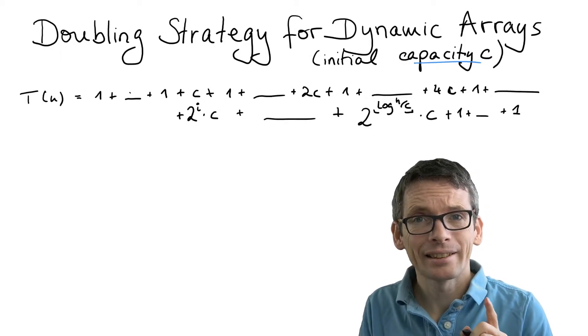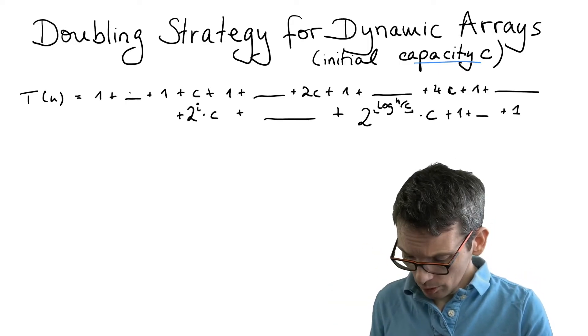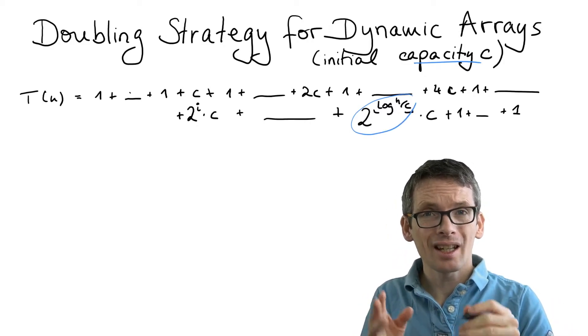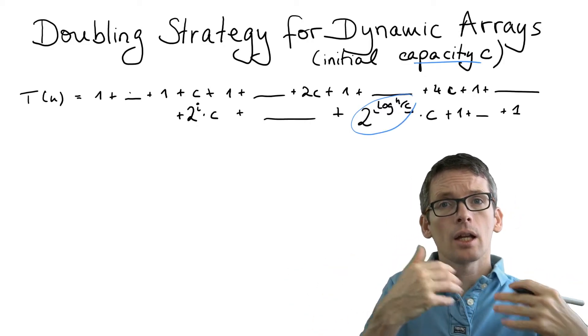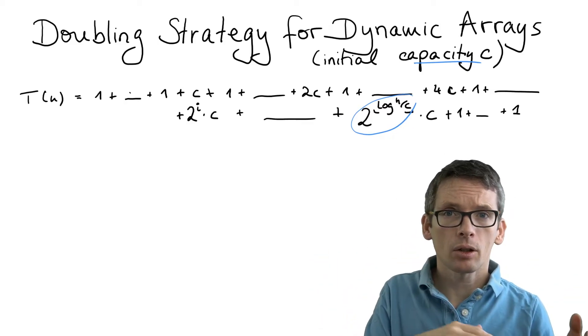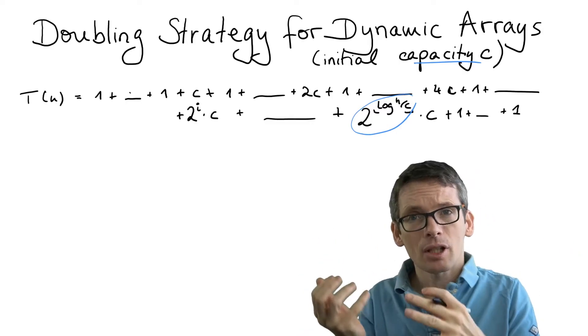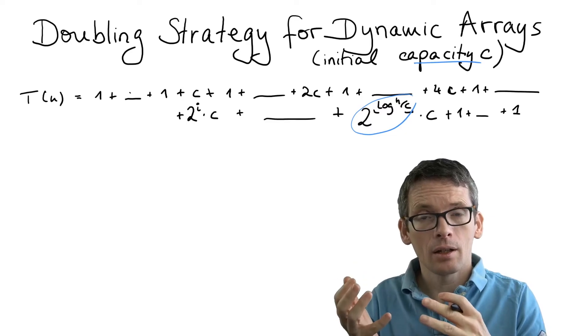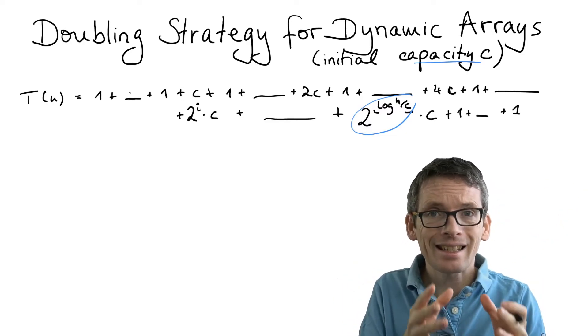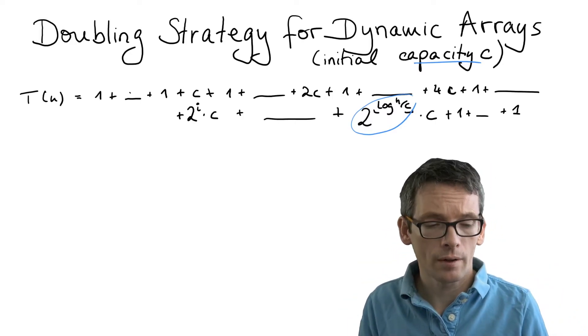So why is this the last doubling term? Because 2 and log, those are inverse, so this term here is essentially n divided by c, and n divided by c times c is n. Now n might not be divisible by c, n divided by c might not be a power of 2, so I might end up slightly lower than n, but then the next power of 2 would be larger than n. So this is the last power of 2 such that this power times c is smaller than n.